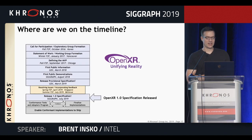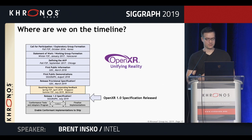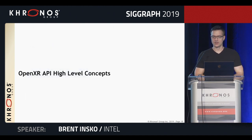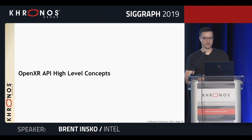Where are we on the timeline? We started in late 2016 and have been providing updates periodically, either at GDC or here at SIGGRAPH. We just released the 1.0 specification on Monday. We have some other things coming up on the timeline, but I'll talk about those a little bit later. Right now I want to talk about the high-level concepts — I'm not going to dive too deep because I want to leave time for the demos.